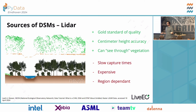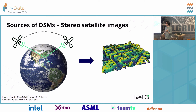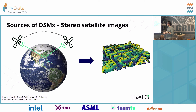There is another way: stereo satellite images — two satellite images taken from different angles of the same location. With clever processing, you can create a digital surface model using two satellite images. Satellites are global, so you don't need to talk to a new company for each region. Satellites image very large areas in one go, and delivery times are relatively quick — hours to days.